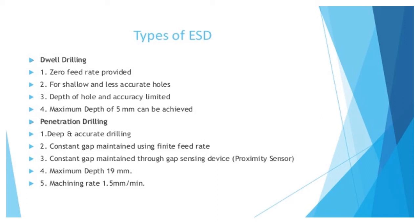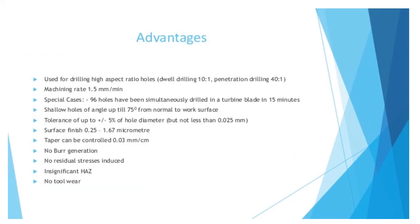The second type is penetration drilling, which produces deep and accurate holes. A constant gap is maintained using gap sensing devices such as proximity sensors. Maximum depth is 19 mm and the machining rate is 1.5 mm per minute.